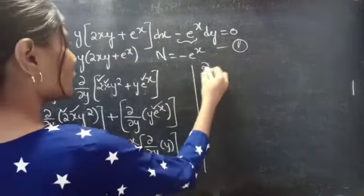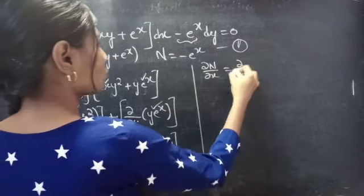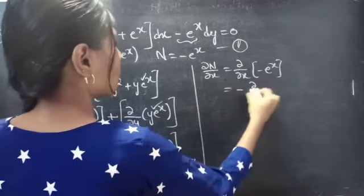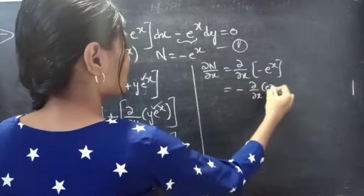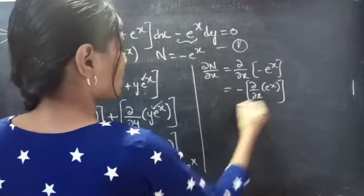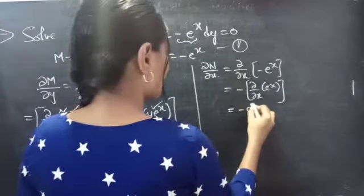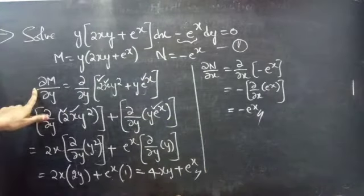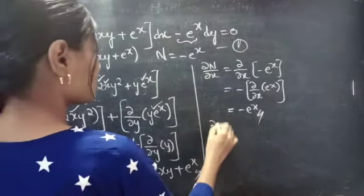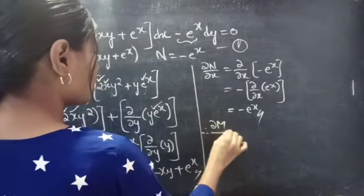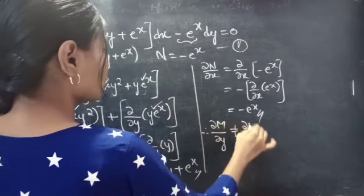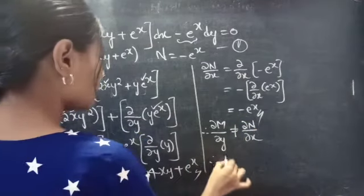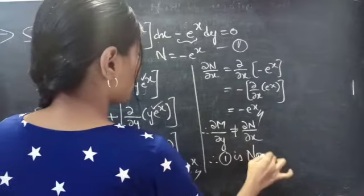Now let's find ∂N/∂x. ∂N/∂x = ∂/∂x(−eˣ) = −eˣ. It is clear that ∂M/∂y is not equal to ∂N/∂x. Therefore ∂M/∂y ≠ ∂N/∂x, and from this we can say that equation 1 is non-exact.